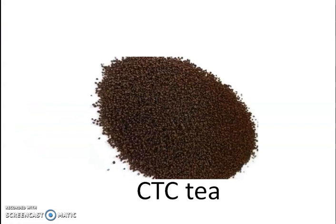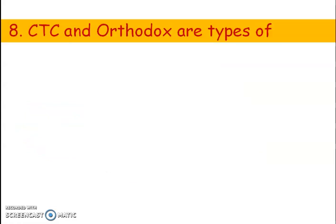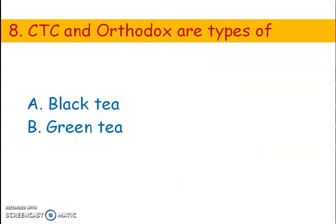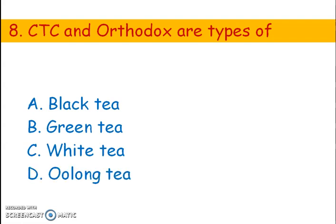This is a picture of CTC tea. Next question. CTC and orthodox are types of which tea? Options: A) Black tea, B) Green tea, C) White tea, D) Oolong tea. The right answer is option A, black tea.